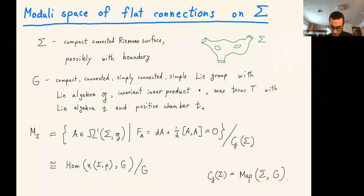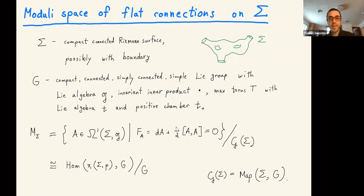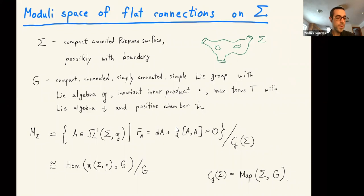I'll finish by showing you what the general formula looks like when the dust settles. So let's start with the moduli space of flat connections on a surface. Sigma is going to be a compact connected Riemann surface — something like this — and it's allowed to have boundary. This is going to be really important: the surface is allowed to have boundary, and at some point I'll assume it has at least one boundary component.